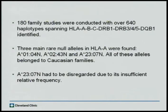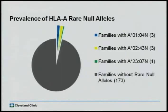After we completed 180 family studies, we developed 640 haplotypes that spanned the typical HLA. From that, three rare null alleles were identified, and all of these were from Caucasian families. However, A2307 null had to be discarded because it only came up once. To understand the prevalence of these potential rare null alleles, here's a pie chart: blue represents A0104 null, yellow A0243 null, and green A2307 null. Both A0104 null and A0243 null showed up in three independent families, so potentially we could have formed associations from that.